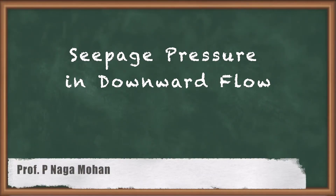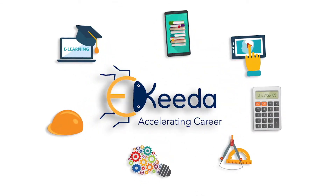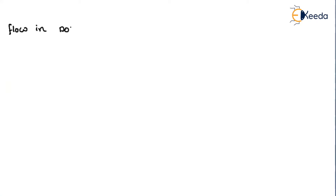Hello friends, welcome back. In the previous lecture we discussed how to find effective stress when flow is happening in the upward direction. Here we will discuss how to find effective stress when the flow is happening in the downward direction.